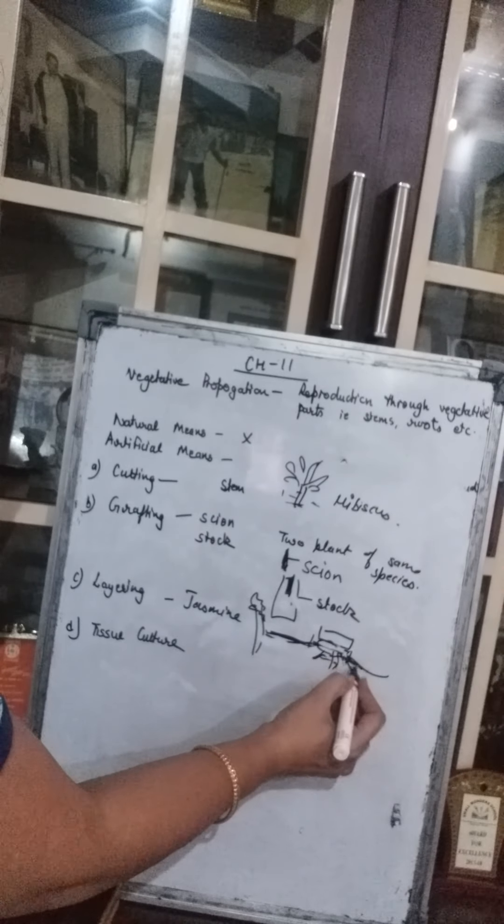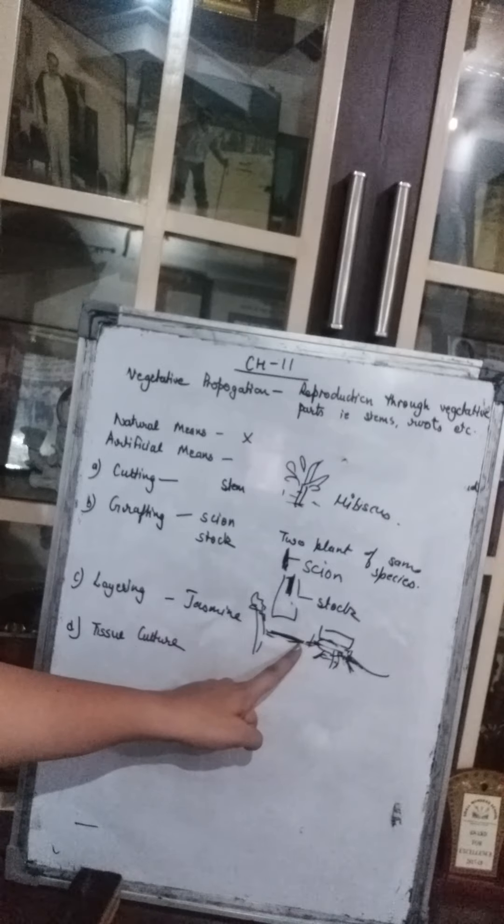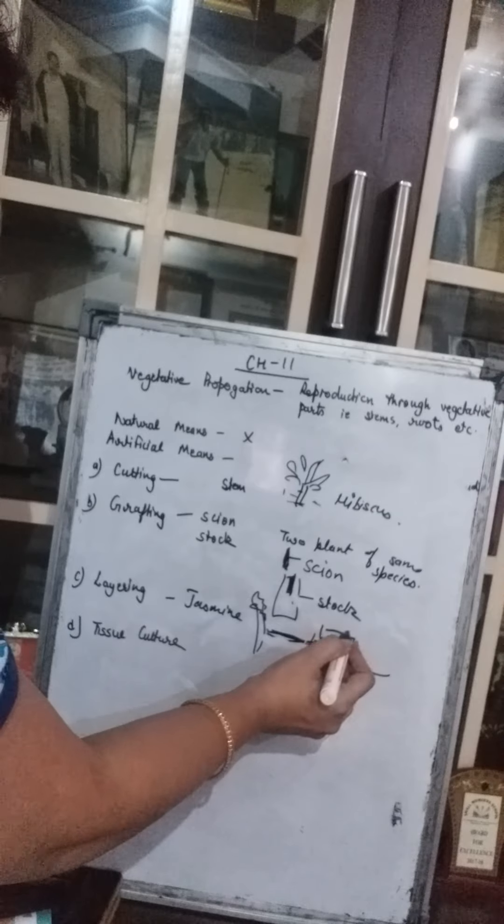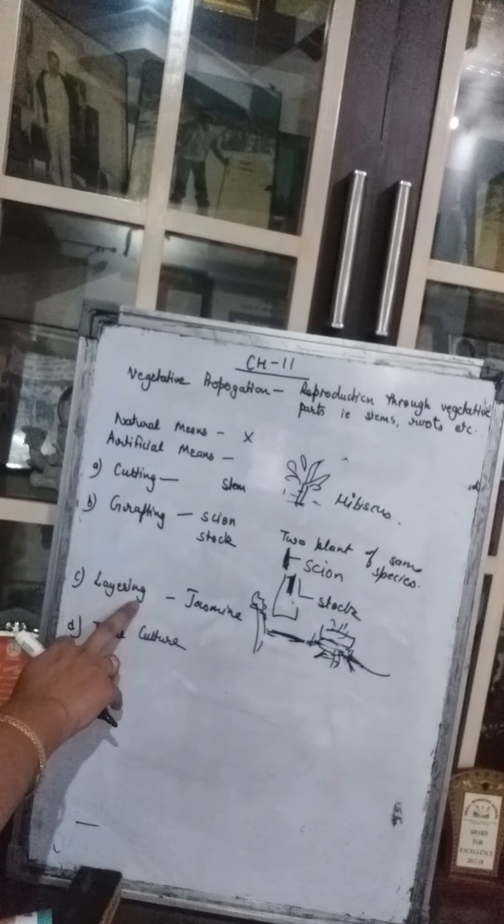Roots start developing from the submerged stem, and the shoot also starts to develop. Once the roots and shoot system are developed, the stem is cut from the parent plant and it grows into a new plant. This is called layering — inserting the stem into the soil without cutting first, then cutting after roots form.